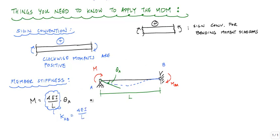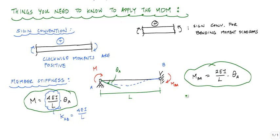Another thing that we can figure out from this substructure is the relationship or the carryover factor from the joint to the other side where the other side is fixed. This MBA, its relationship to this theta A is equal to 2EI over L times theta A. If I combine this equation with this equation, I will get that this MBA is equal to one half M.